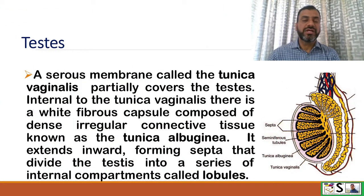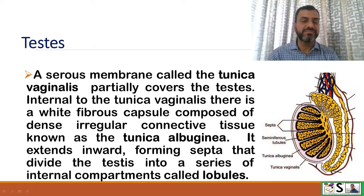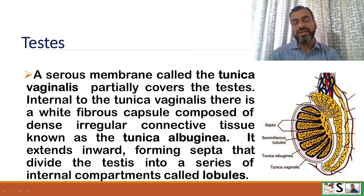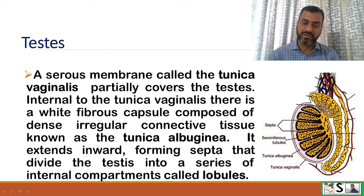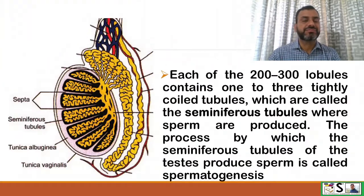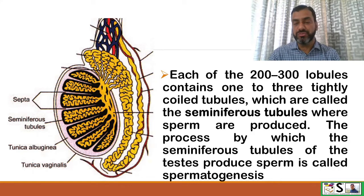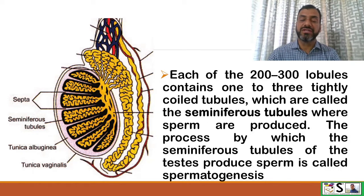A serous membrane called the tunica vaginalis partially covers the testes. Internal to the tunica vaginalis there is a fibrous capsule composed of dense irregular connective tissue known as the tunica albuginea, which extends inward forming septa that divide the testes into compartments known as lobules. Each of the 200 to 300 lobules contains 1 to 3 tightly coiled tubules called seminiferous tubules, where sperm are produced. The process by which the seminiferous tubules produce sperm is called spermatogenesis.